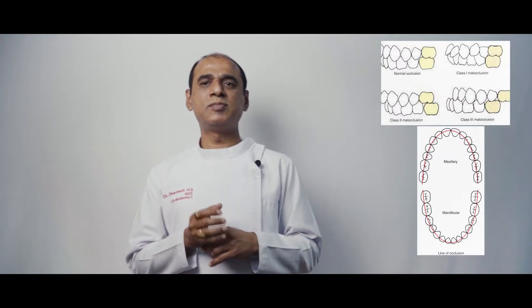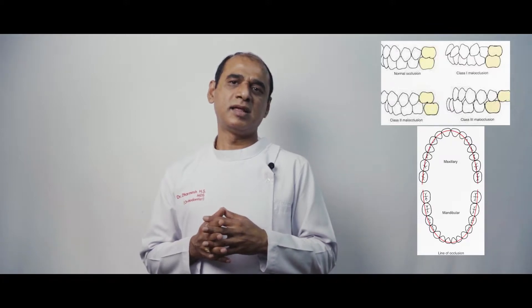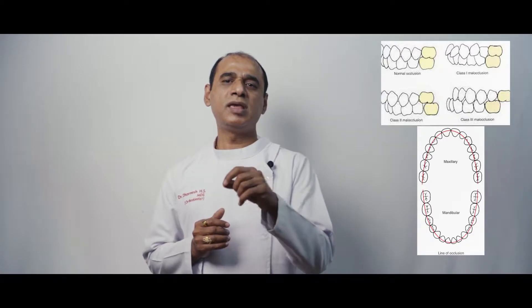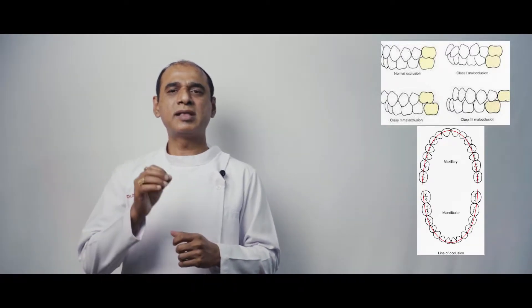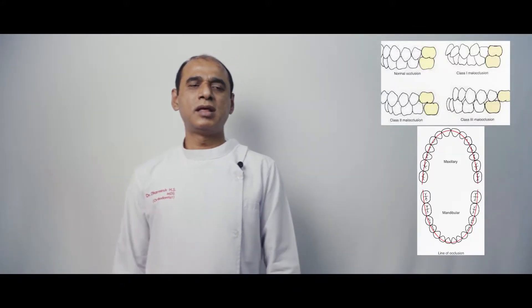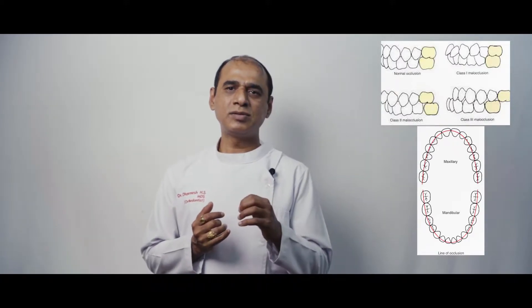Angle's classification is based on the anteroposterior relationship of the teeth with each other. Angle introduced this classification with the concept of the key of occlusion and line of occlusion — the maxillary first permanent molar is considered as the key of occlusion. Angle described three classes of malocclusion: Class 1, Class 2, and Class 3. Class 2 has Division 1 and subdivision, Division 2 and subdivision, and Class 3 has true Class 3, pseudo Class 3, and subdivision.